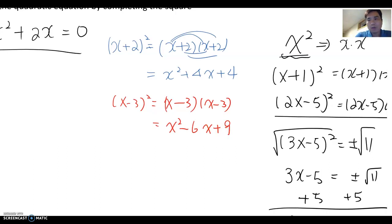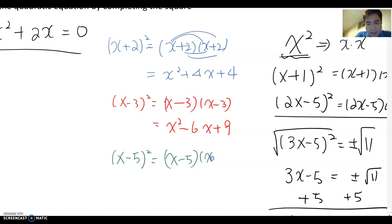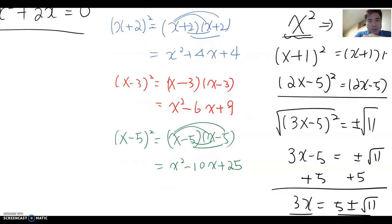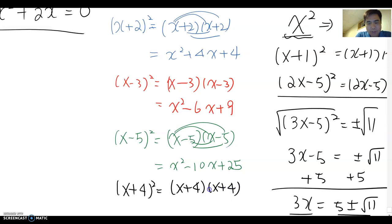I'm going to write one more and then we can talk about the pattern. What about (x-5)²? That becomes (x-5) times (x-5), which gives x² - 10x + 25. One more: (x+4)² equals (x+4) times (x+4), which gives x² + 8x + 16. Now let's think about some pattern here.